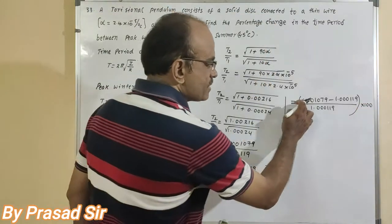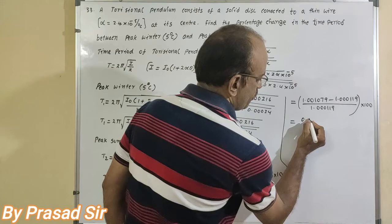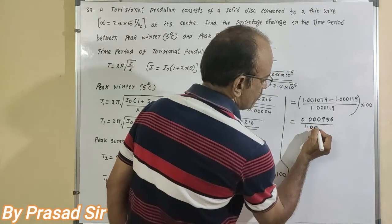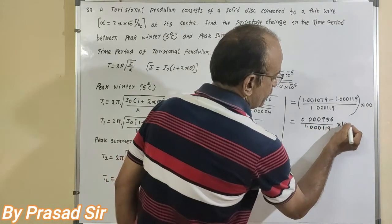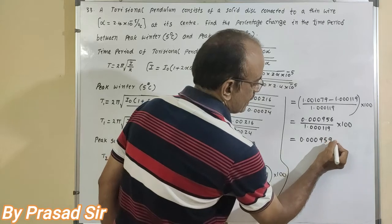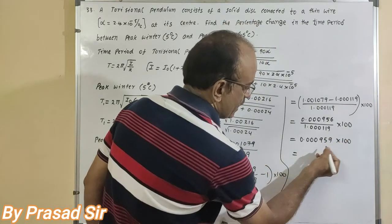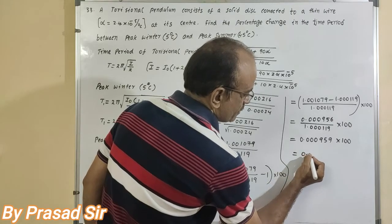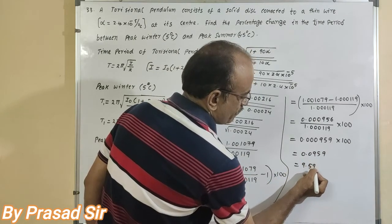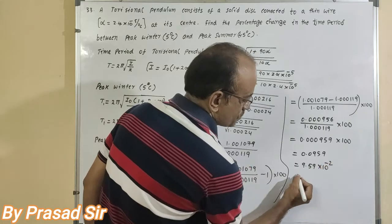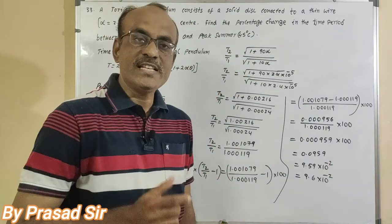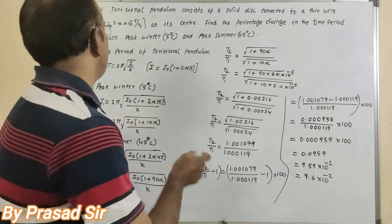Subtracting gives 0.00000956 divided by 1.00119, multiplied by 100. On division and multiplication, we get 0.00000959 into 100, which equals 9.59 into 10 to the power of minus 2, or approximately 9.6 into 10 to the power of minus 2. This is the solution for question number 33.